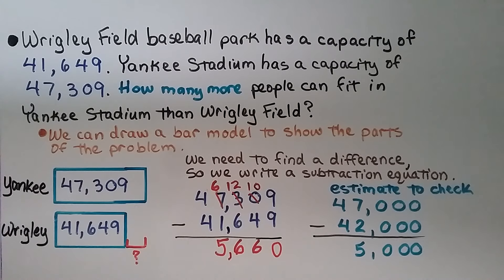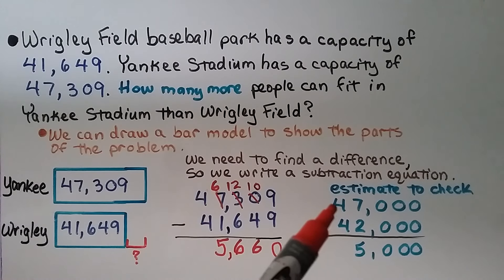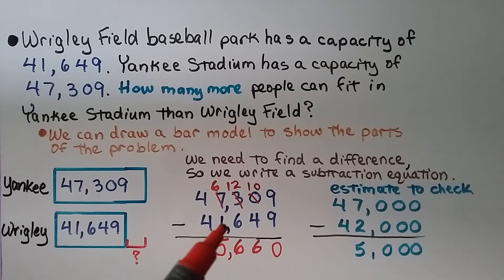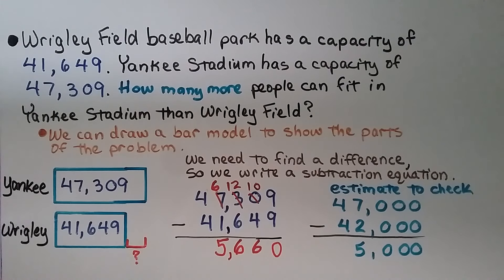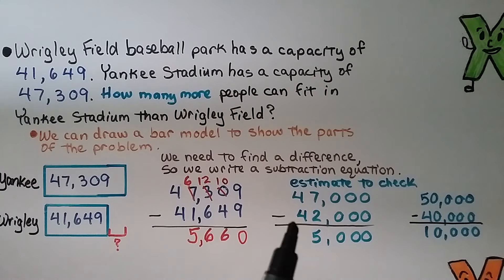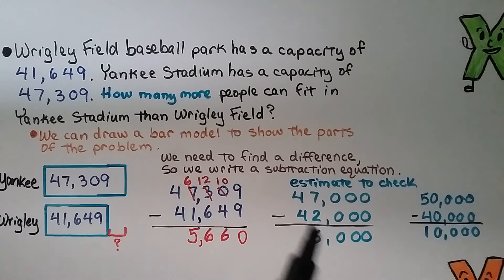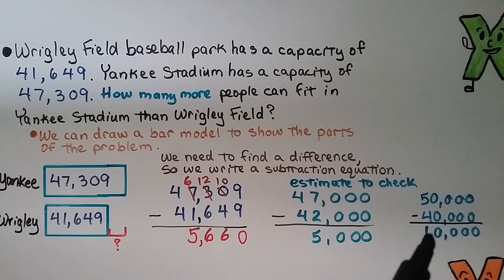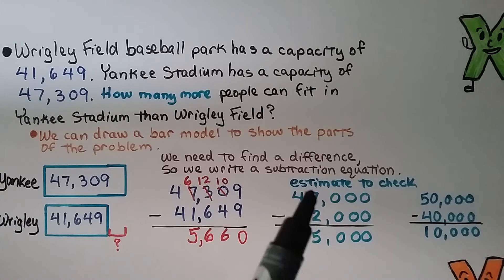We estimate to check: the 3 tells the 7 to stay the same, giving 47,000. The 6 tells the 1 to go up to 2, giving 42,000. 47,000 minus 42,000 is about 5,000 — our answer is reasonable. If we had rounded to the 10,000s place, the 7 would tell the 4 to go up to 5 and the 2 would tell the 4 to stay the same, giving 50,000 minus 40,000 equals 10,000 — that's too far away. So we went to the 1,000s place to be more accurate with our estimate.